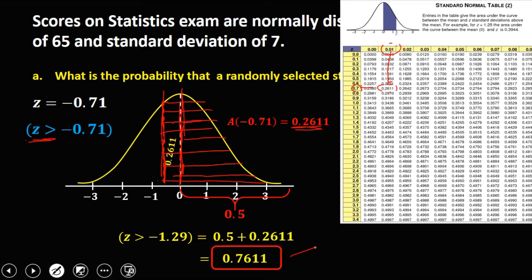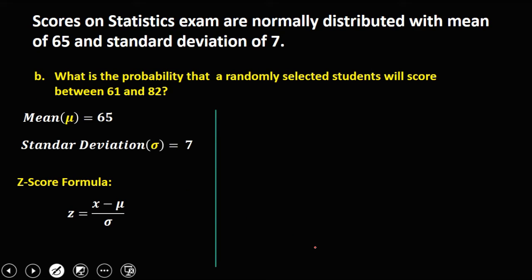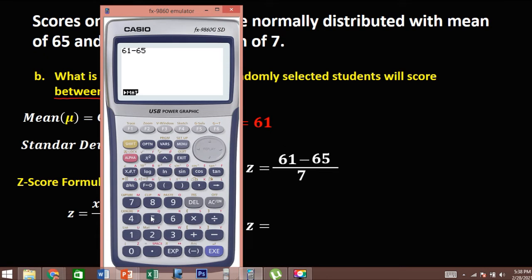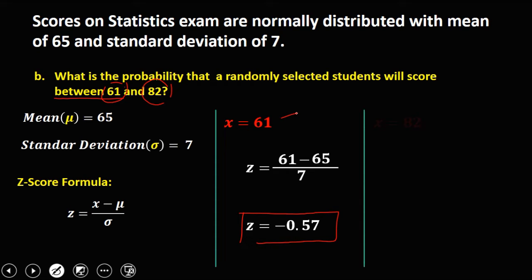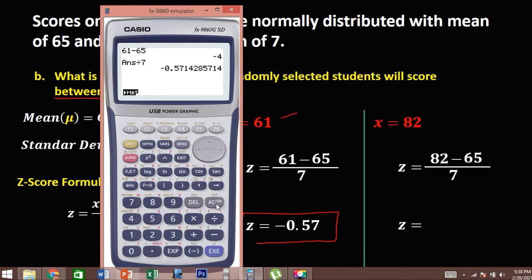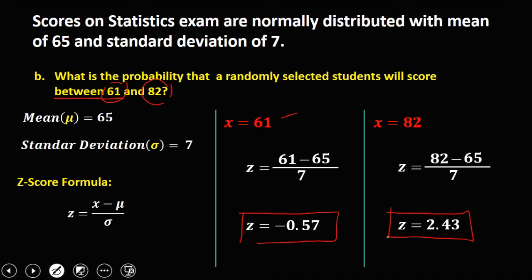For the next problem: what is the probability that a randomly selected student will score between 61 and 82? We need to convert 61 and 82 to standard scores. For x = 61: z = (61 − 65) / 7 = −0.57. For x = 82: z = (82 − 65) / 7 = 2.43.